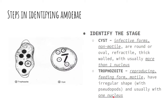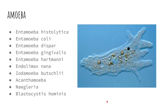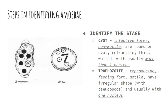Using this information, we are categorizing our amoebas according to stage. The stage can be in the cyst form, which is the infective form — the non-motile form. It is round, oval, and refractile. It has a thick wall with usually more than one nucleus.